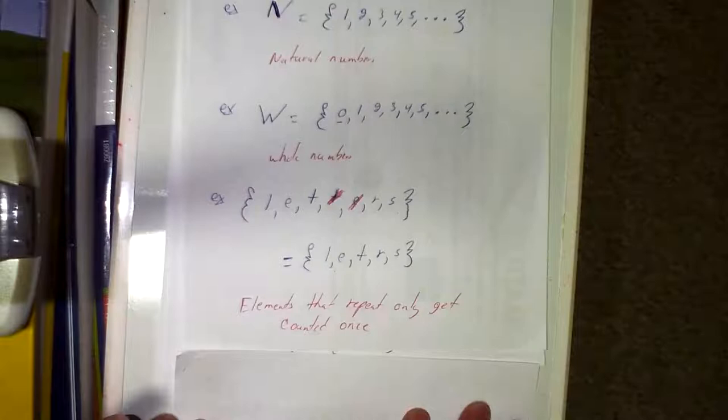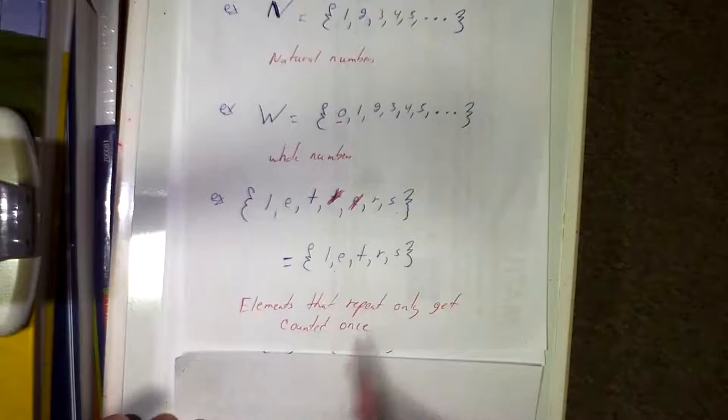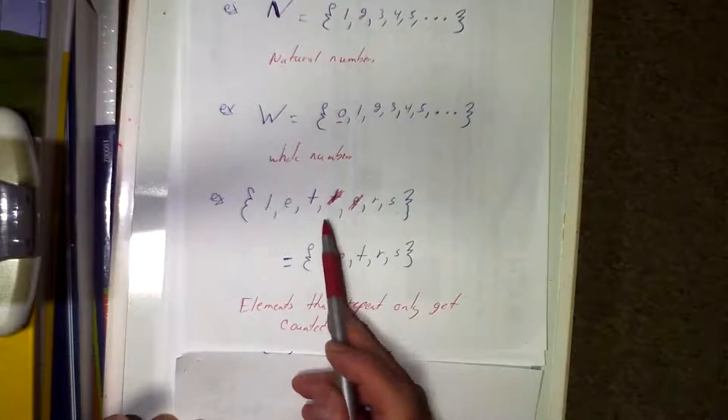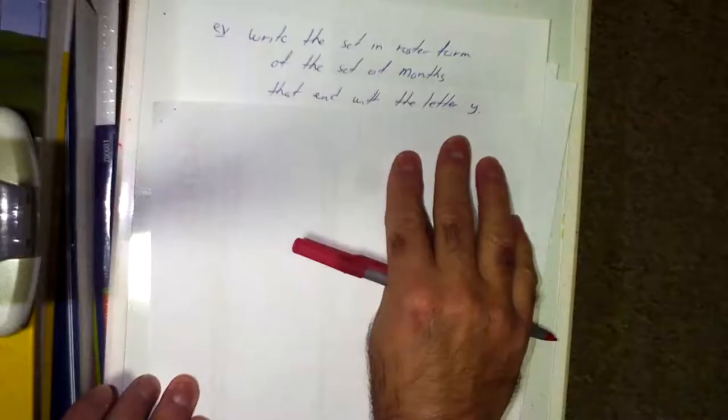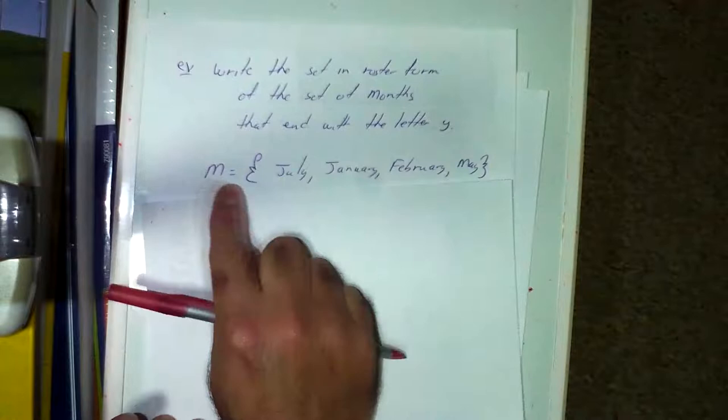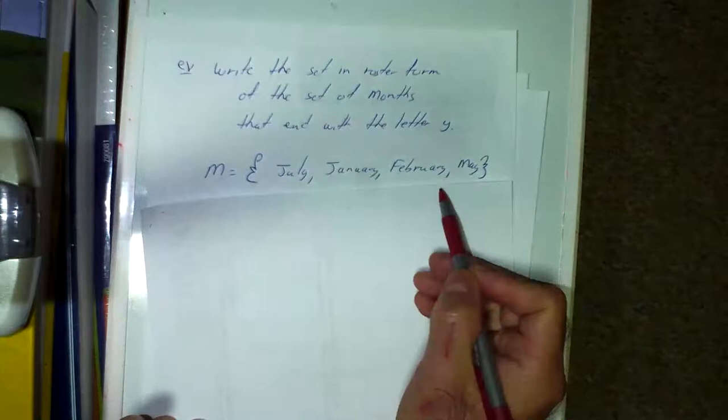Here's an example: write the set in roster form of the months that end with the letter Y. We have to think about which months end in Y. I'll designate this set M. Those months are January, February, May, and July. That's an example of the roster method: braces, your objects, separated by commas.